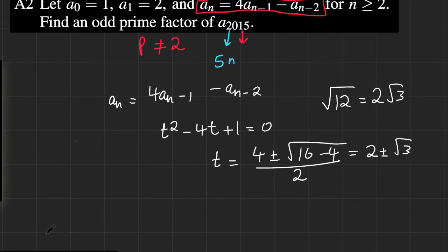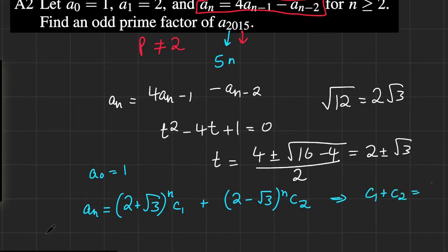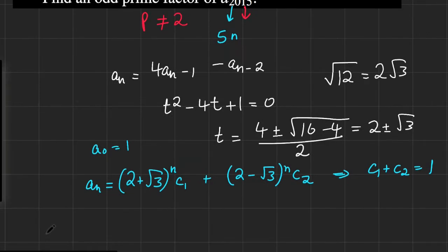Therefore, by the theory of linear recurrence relations, which if you haven't studied yet, it's in the post in the description, we have that A_n equals (2 plus the square root of 3) to the n times C_1 plus (2 minus the square root of 3) to the n times C_2. Plugging in our initial condition of A_0 equals 1, we get that this would imply that C_1 plus C_2 equals 1. Plugging in the second condition of A_1 equals 2, that would imply that, factoring stuff out and doing a bit of mental math, 2C_1 plus C_2 plus the square root of 3 times (C_1 minus C_2) equals 2.